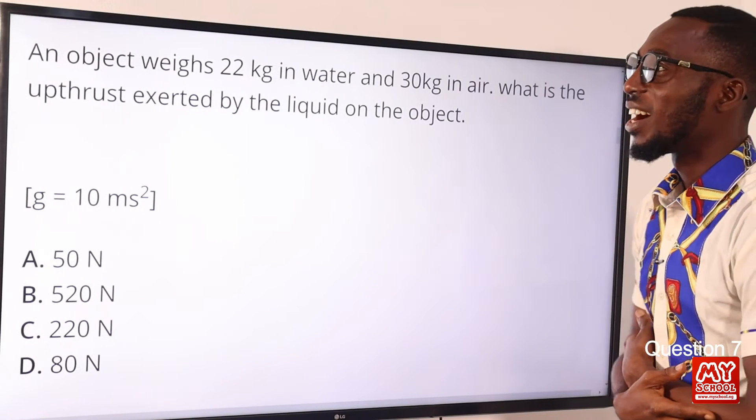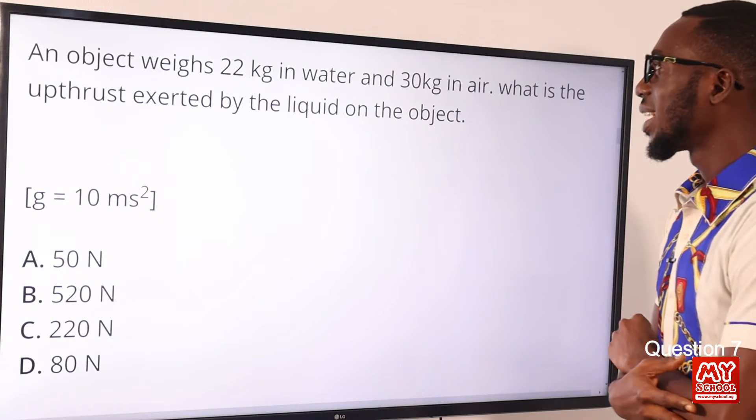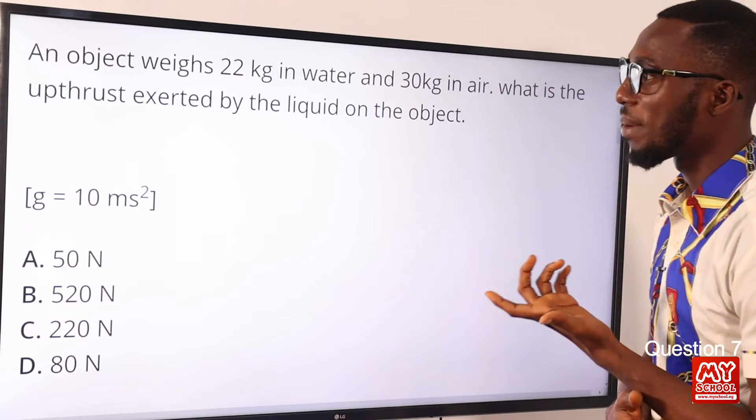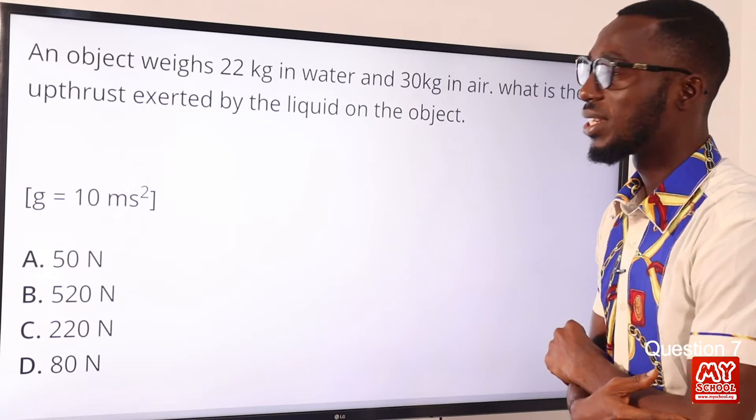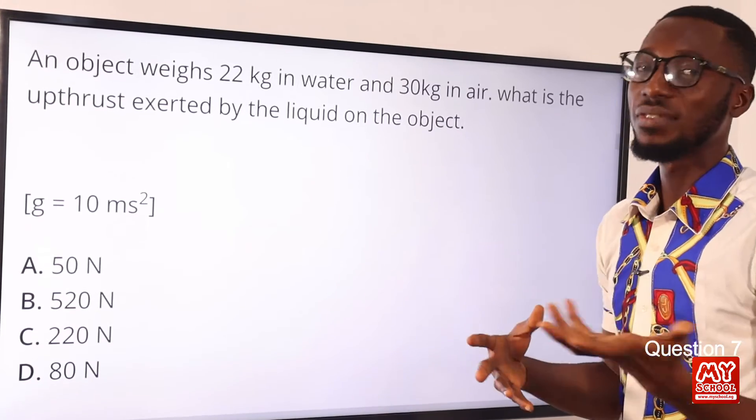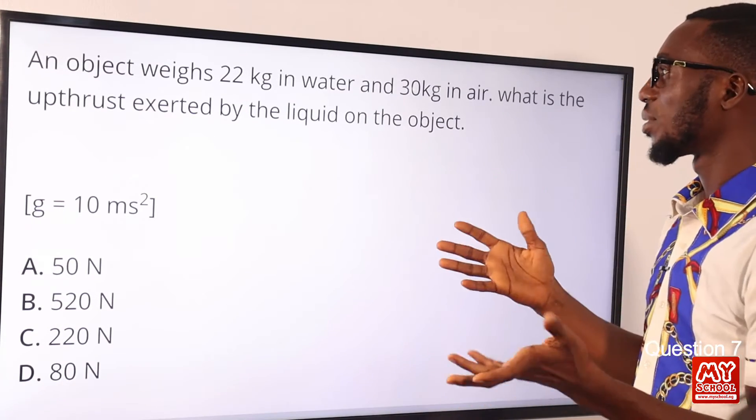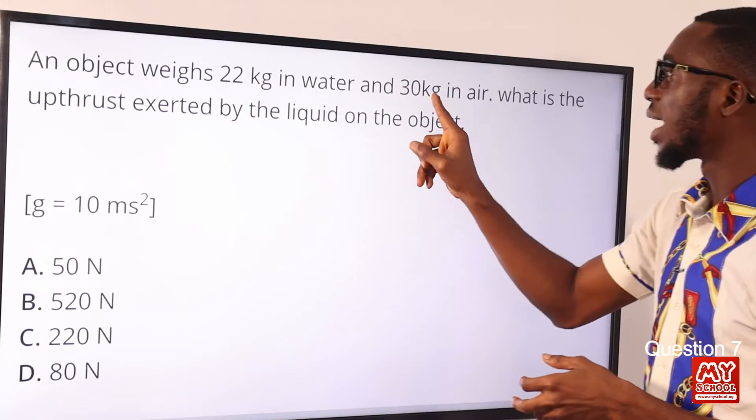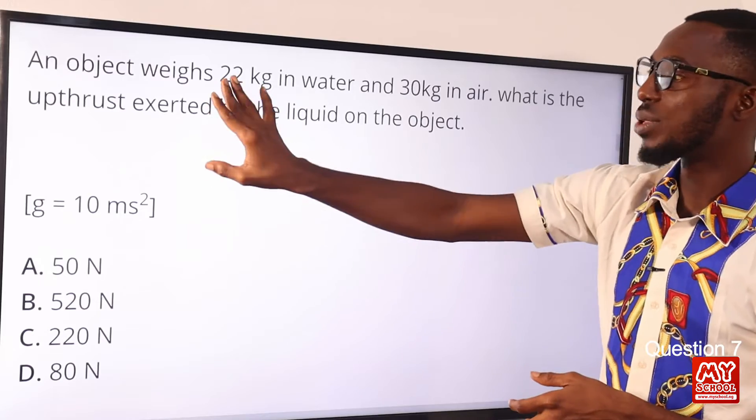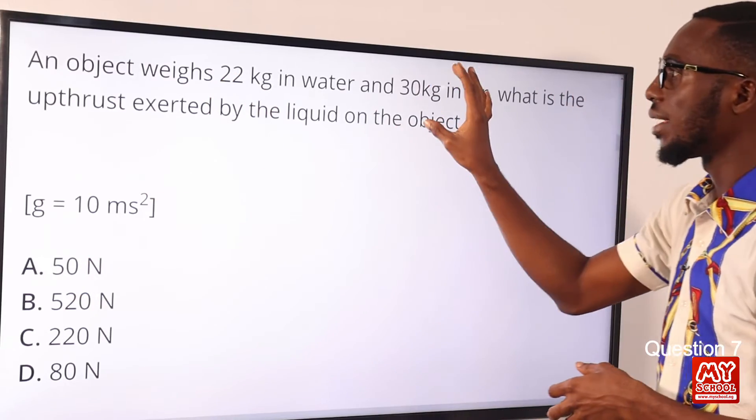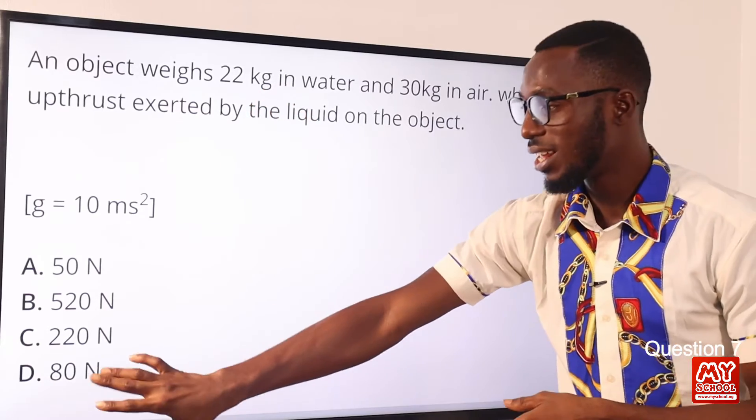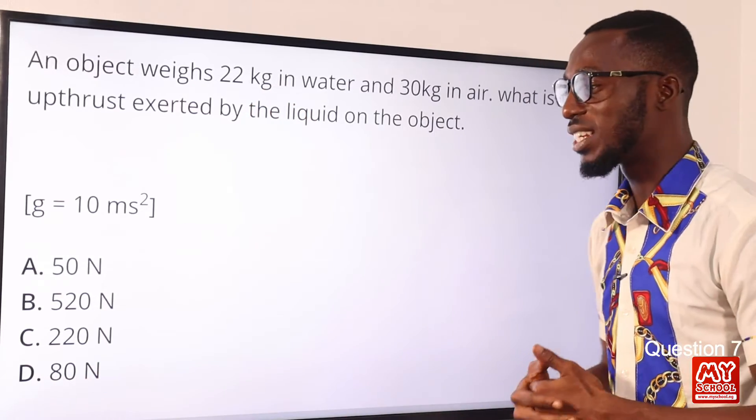Question 7. An object weighs 22 kg in water and 30 kg in air. What is the upthrust exerted by the liquid on the object? So remember that upthrust in the liquid is the same or we are talking about identical setup when it comes to the weight of the liquid displaced. So that is just telling you 30 minus this, but we can't go direct. We have to change this to Newton scale. So that will be 30 times 10 and 22 times 10. So this makes 300, this makes 220. So 300 minus 220, that gives us 80 Newton. So the correct option is option D for 80 Newton.